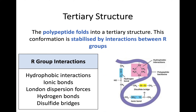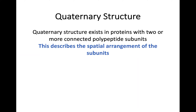Tertiary structure is where it gets more complex. Polypeptides fold into this next stage, stabilized by interactions between the R groups of amino acids — ionic bonds, London dispersion forces, hydrogen bonds, and disulfide bridges that link between two R groups, pulling the protein into that tertiary ball-of-string shape. The final form is quaternary structure, which exists in proteins with two or more connected polypeptide subunits and describes the spatial arrangement of these subunits.